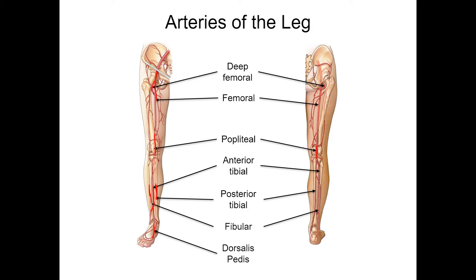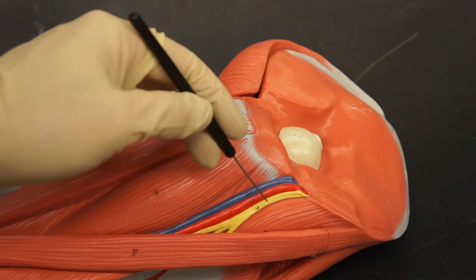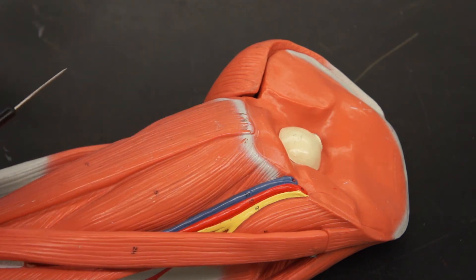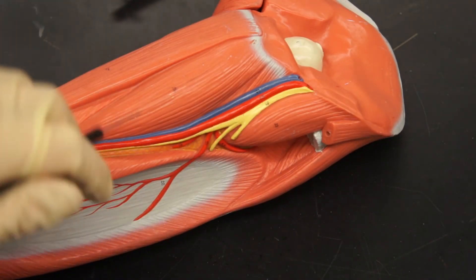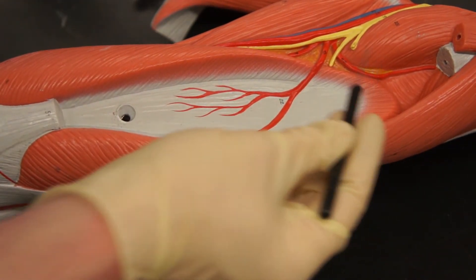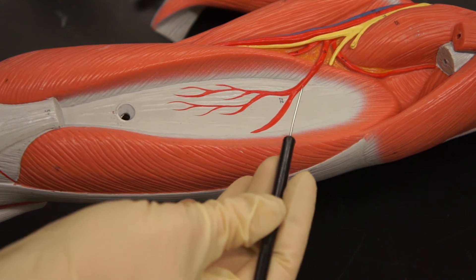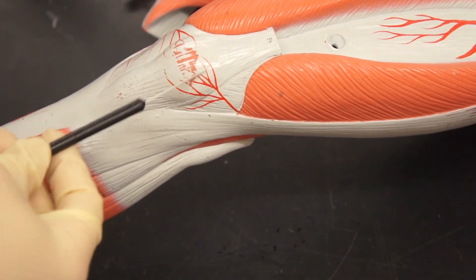Here from the popliteal, the first branch is into the anterior tibial, the second branch is into the fibular, and its continuation is the posterior tibial artery. On this model we can see the femoral artery and vein, and some branches of the femoral artery. This is the descending and ascending branches of the lateral circumflex femoral artery. On the front here we have the patellar anastomosis.